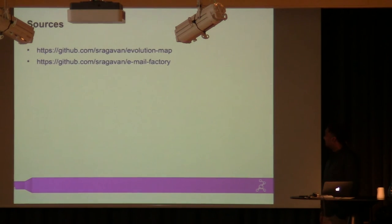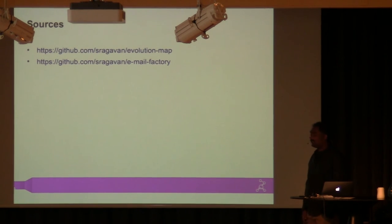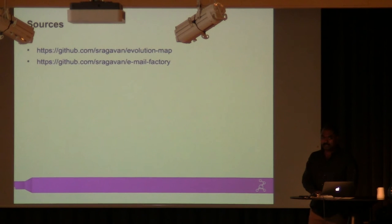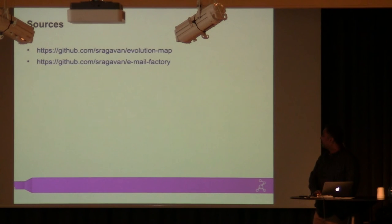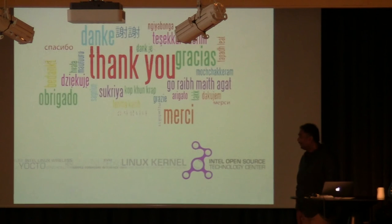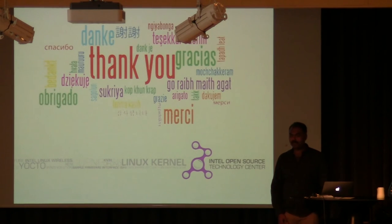The sources are posted on my GitHub, under camel-map. That's the Camel provider and the evolution plugin, and the email factory I was talking about is also posted there — that's the mail server part of it. If you have any questions, I'd be happy to answer.